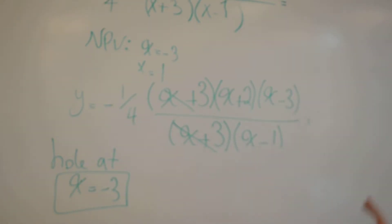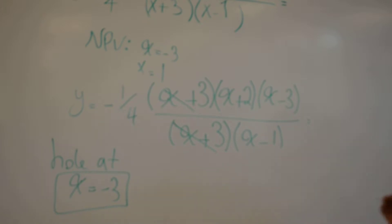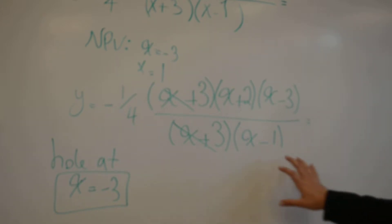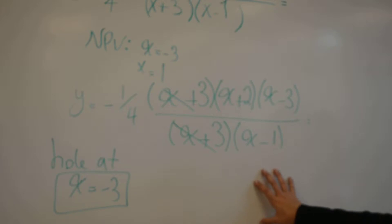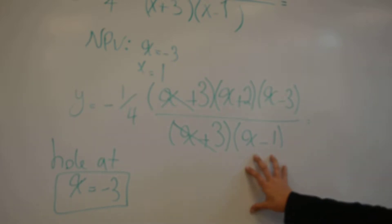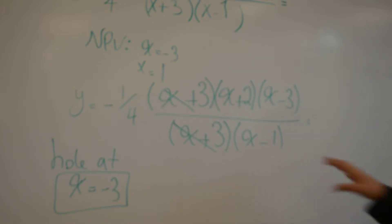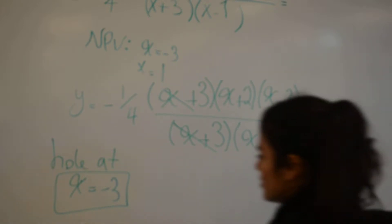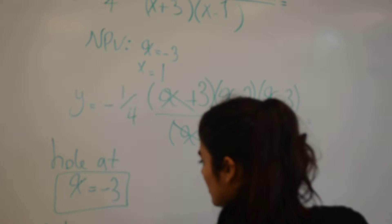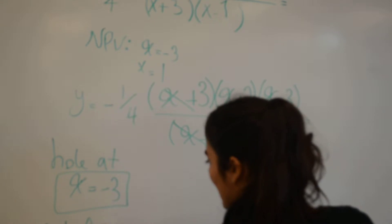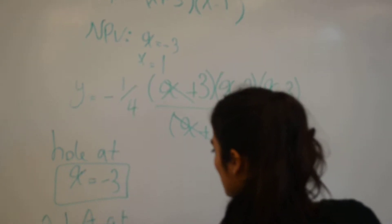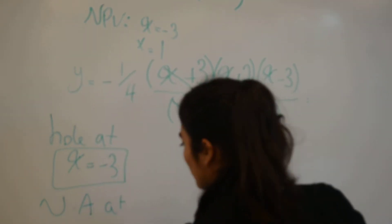The next thing we need to do is find any vertical asymptotes. Vertical asymptotes are located in our denominator, which in this case is x minus 1, giving us a vertical asymptote at x equals 1.